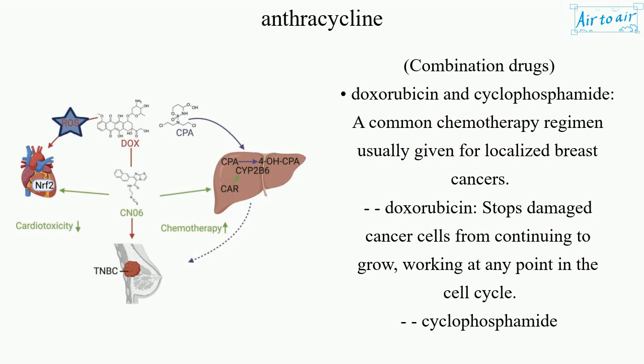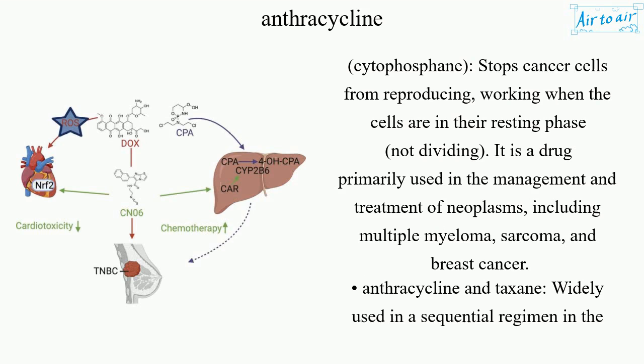Combination drugs. Doxorubicin and cyclophosphamide, a common chemotherapy regimen usually given for localized breast cancers. Doxorubicin stops damaged cancer cells from continuing to grow, working at any point in the cell cycle. Cyclophosphamide, also known as cytophosphane, stops cancer cells from reproducing, working when the cells are in their resting phase, not dividing. It is primarily used in the management and treatment of neoplasms, including multiple myeloma, sarcoma, and breast cancer.